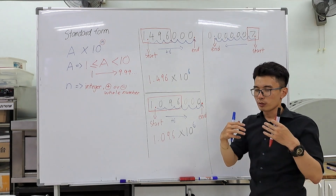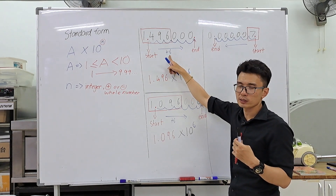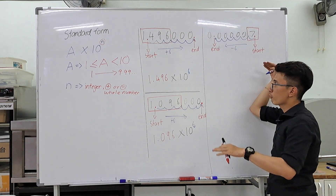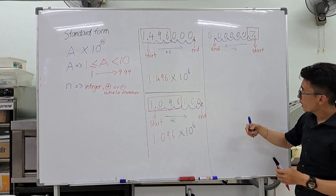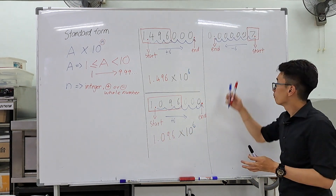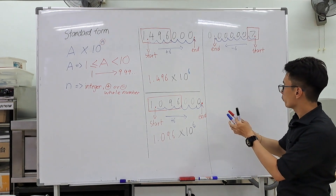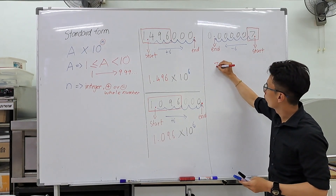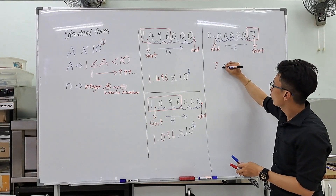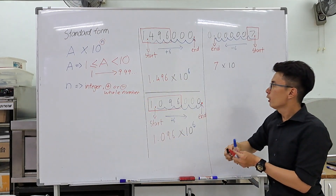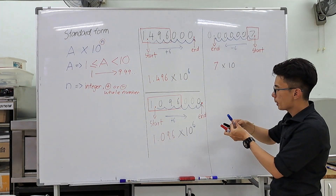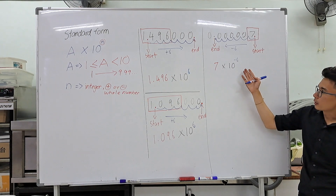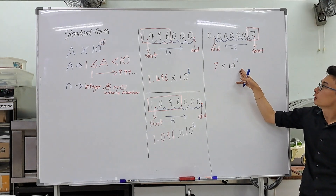Think about this: on a number line, when we go to the right it's positive, and when we go to the left it's negative. We went six steps to the left, so the power is negative six. With all this information, we write this in standard form as 7 × 10 to the power of negative six. That is our value of a multiplied by 10, and the power is negative six.